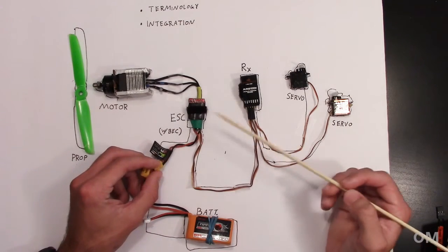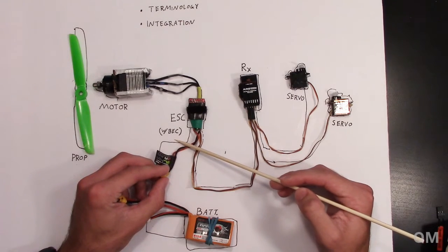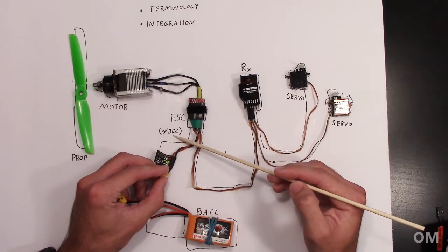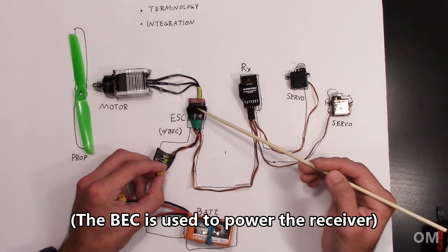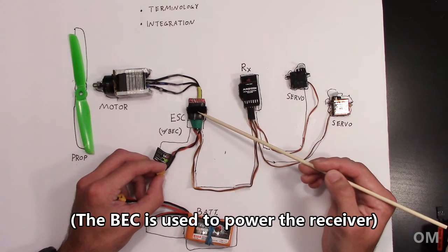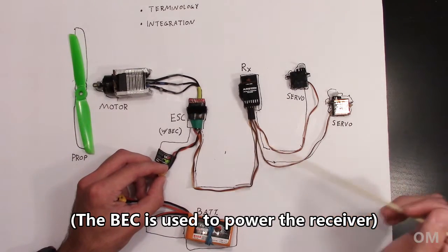So we want to be able to control how much power we're giving the motor, and that's what the ESC is for. Now, this ESC has what's called a BEC, which is a battery eliminator circuit. Don't worry about that too much, but just know if you are looking for one, you're going to want one with a BEC for this setup.